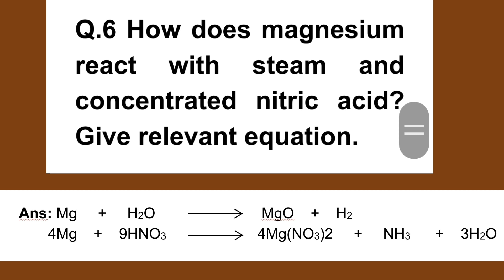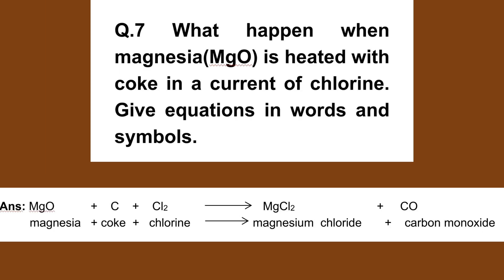Number 6. How does magnesium react with steam and concentrated nitric acid? Give relevant equations. Number 7: MgO heated with coke in a current of chlorine. Give equations in words and symbols. MgO plus carbon plus Cl2 gives MgCl2 plus CO (carbon monoxide).